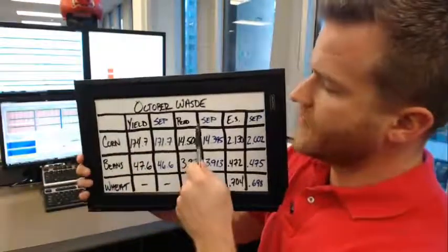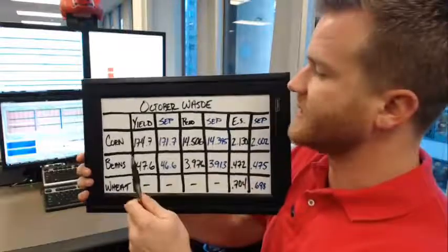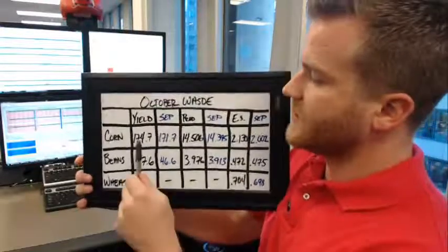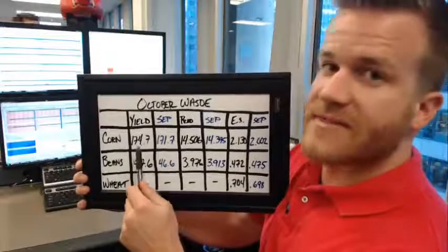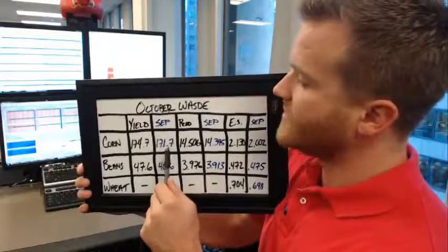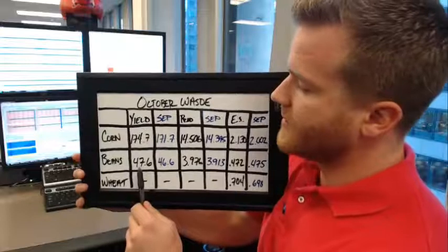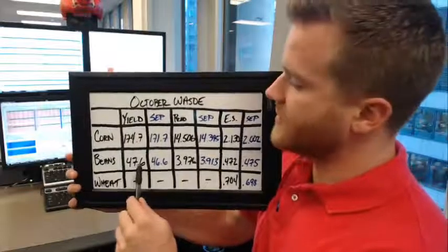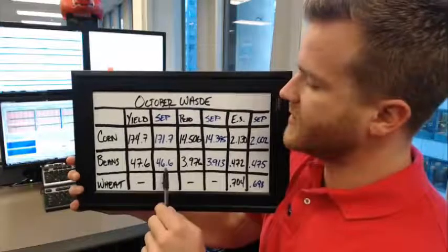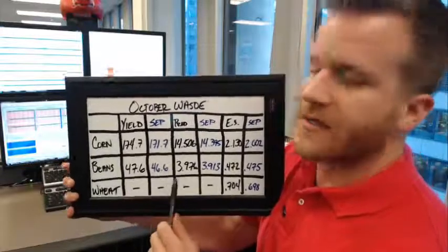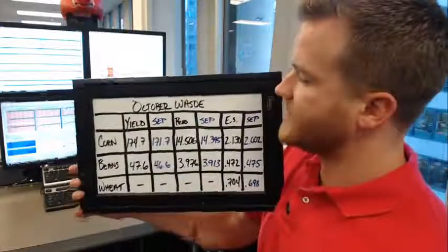We're going to go over yield, production, and then 2014-15 ending stock estimates. For yield expectations, the average trade estimate is 174.7 bushels per acre versus 171.7 from the USDA in September. Bean yield expectation: the average trade estimate is 47.6 bushels per acre versus 46.6 in September — both higher yield estimates than what we got from the USDA in September.